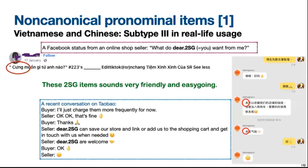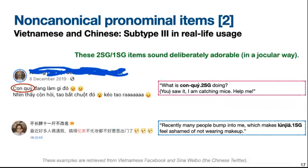Here we see how this subtype is used in real life. The Vietnamese example is a Facebook post from an online shop seller asking 'what do dear want from me?' — meaning 'what do you want to buy from me?' In the Chinese conversation from Taobao, the seller says 'dear can save our store' to mean 'you can save our store', and 'dear are welcome' to mean 'you are welcome' — these second-person items are very friendly and easygoing. On the other hand, we have other items in this subtype as well. For example, cưng đang làm gì — 'what is dear doing?' — to mean 'what are you doing?' Similarly, in the Chinese example, 'recently many people bummed into me, which made lǒng jiā feel ashamed for not wearing makeup'. These first- and second-person singular items sound deliberately adorable in a jocular way in both languages.